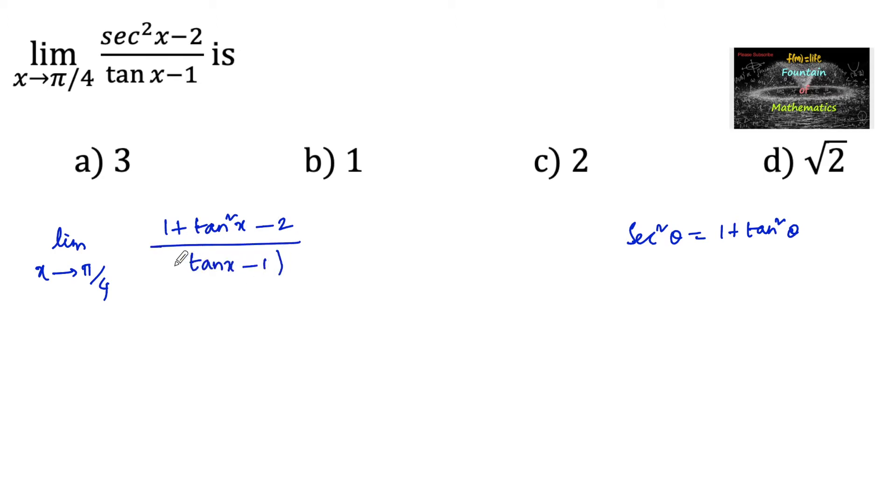So limit as x approaches π/4, tan squared x minus 1 in the numerator, divided by tan x minus 1 in the denominator.